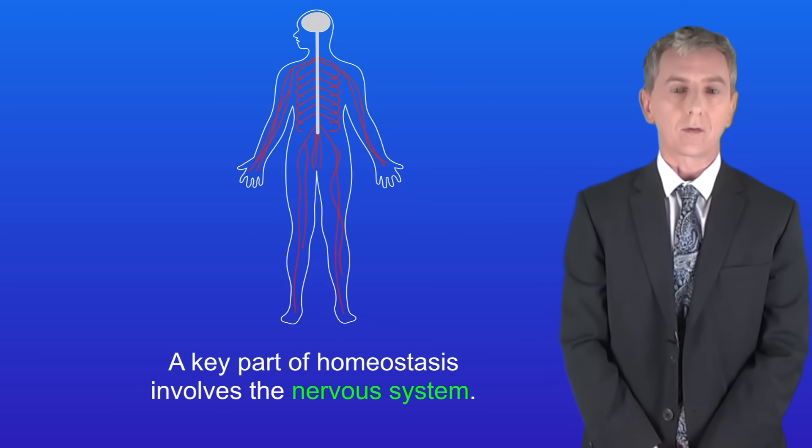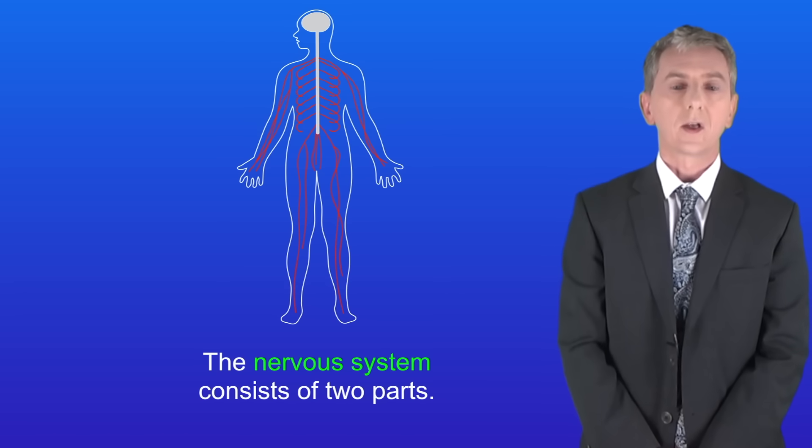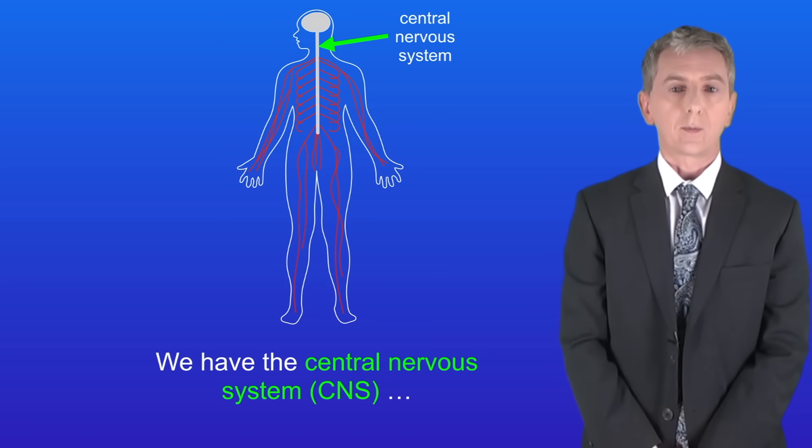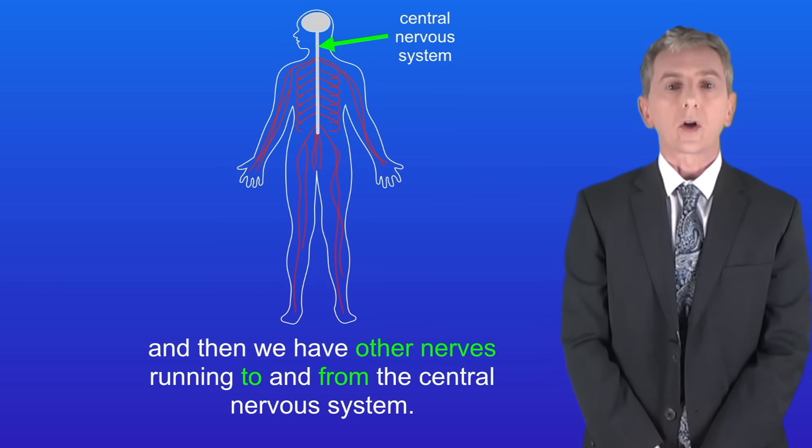Now a key part of homeostasis involves the nervous system. The nervous system consists of two parts. We've got the central nervous system or CNS which is the brain and the spinal cord. And then we've got other nerves running to and from the central nervous system.